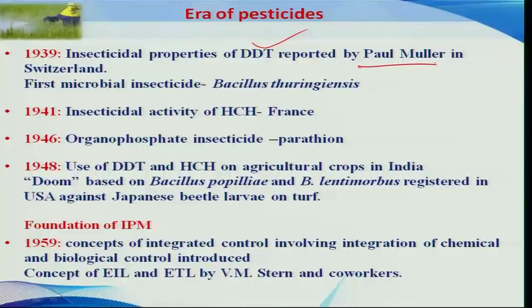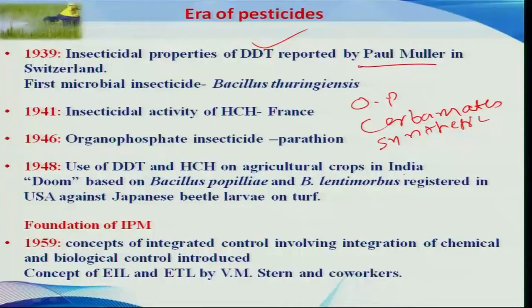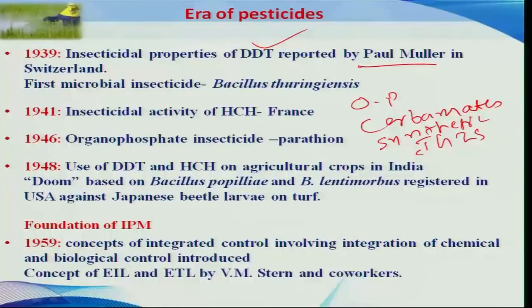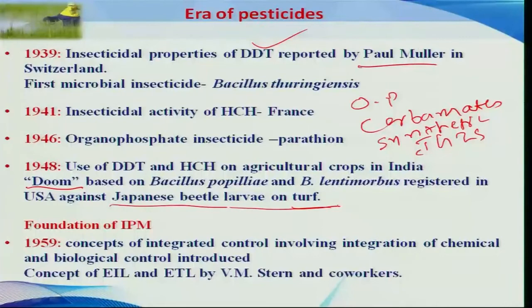After the invention of DDT by Paul Müller, there was a tremendous increase in the introduction of many compounds belonging to different groups, including chlorinated hydrocarbons, organophosphorus (OP) compounds, carbamates, synthetic pyrethroids, and IGRs. The use of these compounds — especially chlorinated hydrocarbons — was tremendous on agricultural crops in India and other countries. At the same time, the biorational compound doom was introduced in the USA against Japanese beetle larvae which attack turf.